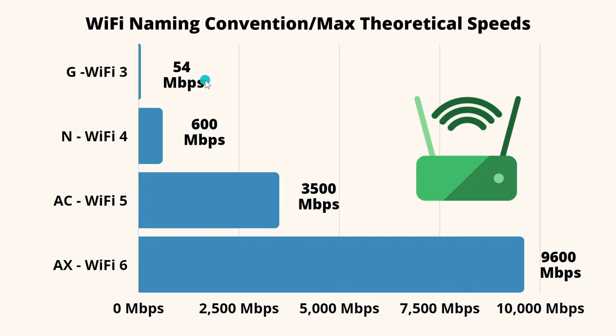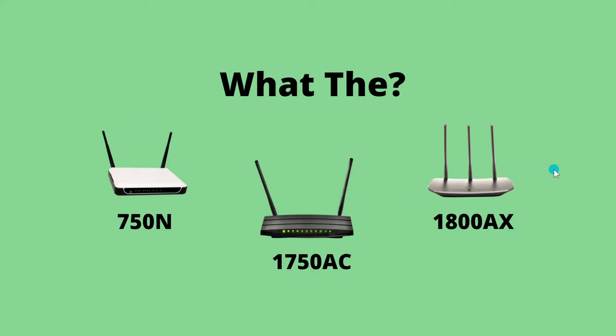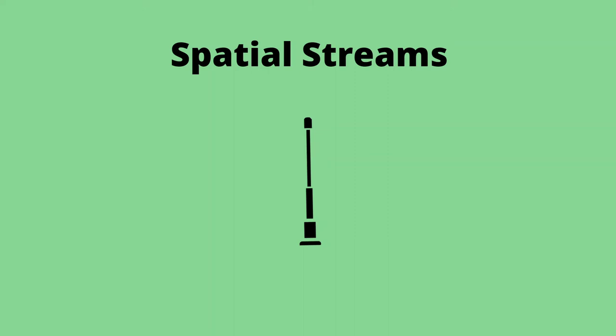Back in the days of Wi-Fi 3, you were only looking at a single stream. As time went on, they started adding bands and streams to Wi-Fi routers to the point where these numbers got almost ridiculous. In order to understand that, you need to understand something you probably haven't heard a lot about, which is spatial streams. A spatial stream is simply a connection that sends and receives data to your wireless router and any wireless device.